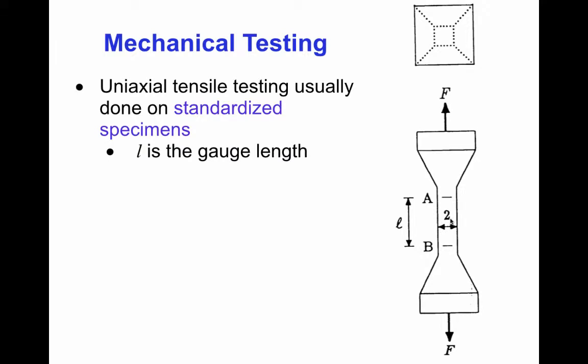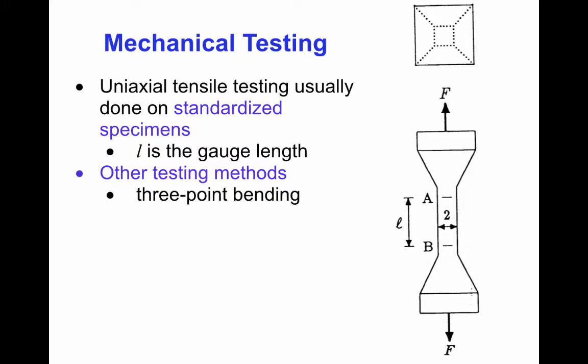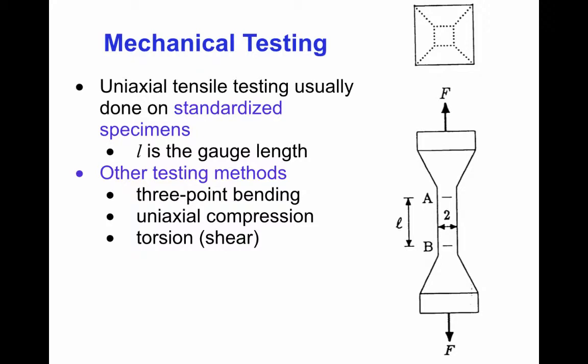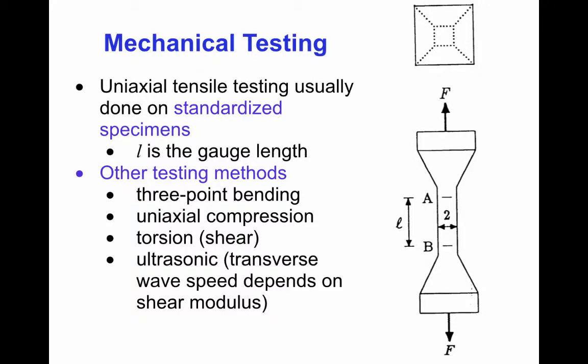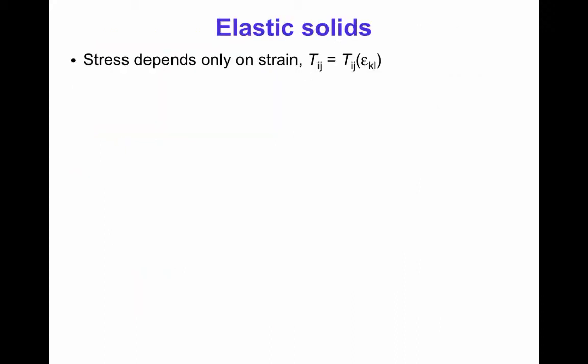The stress is calculated by dividing the force by the area of the central portion. There are many other types of tests as well, including three-point bending tests, uniaxial compression, or torsional shearing tests. Another test is the ultrasonic test, where the speed of wave propagation through the material is measured, which gives an indication of the shear modulus. In an elastic solid, the stress depends only on the strain, and not on the path, previous history, or rate of strain.